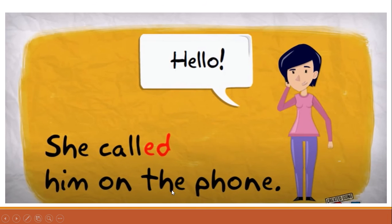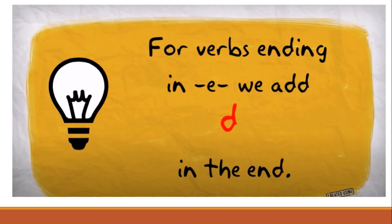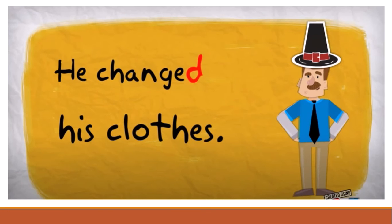She called him on the phone. Look — this is the verb 'call' and I'm adding 'ed' to the verb to mean that this sentence happened in the past and finished. Rule number two: for verbs ending in 'e', we add only 'd'. So if the verb already has an 'e' at the end, we put only 'd'. Like: he changed his clothes. I have 'e' in the verb 'change', so I put only 'd' to make it past simple.